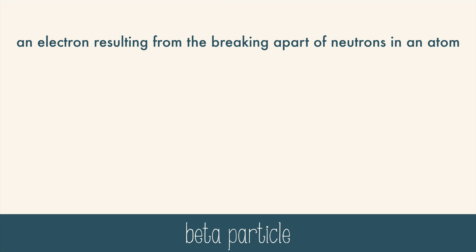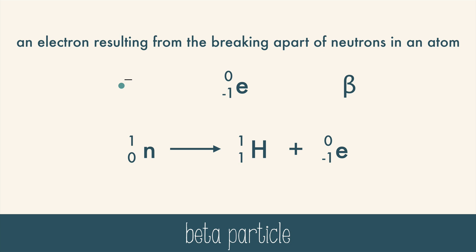A beta particle is an electron resulting from the breaking apart of neutrons in an atom. The neutron breaks into a proton and an electron, which is the beta particle. A beta particle is written in isotope notation, or with the Greek letter beta. You can think of beta radiation as a neutron breaking into a proton and an electron, so when you see radioactive decay like this, you'll know that a neutron has undergone a change into a proton and an electron. The numbers at the top and bottom of the isotope notation still add up to a balanced equation.